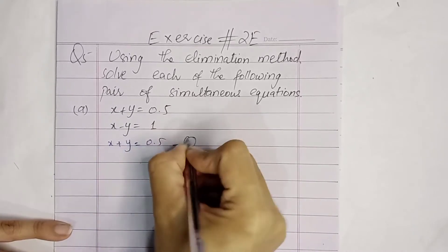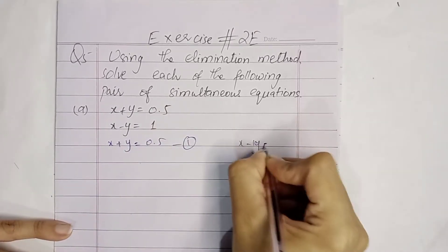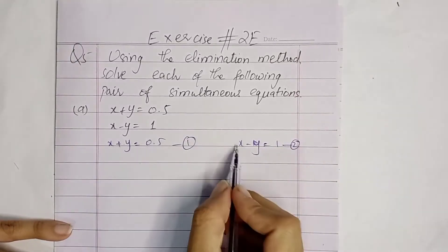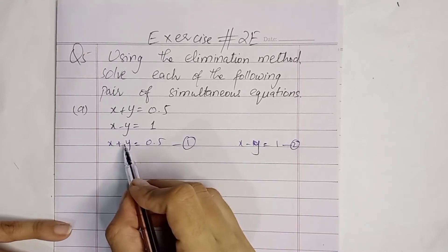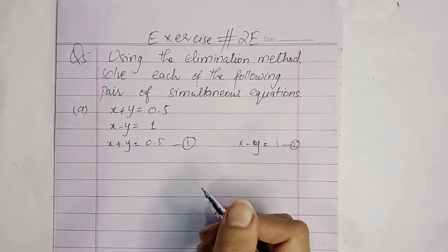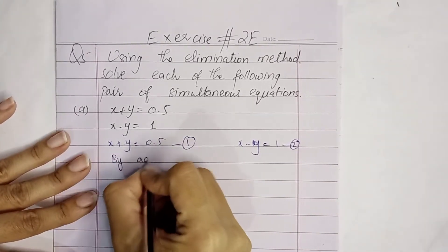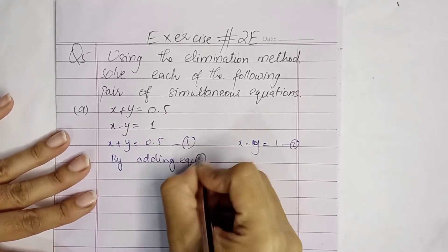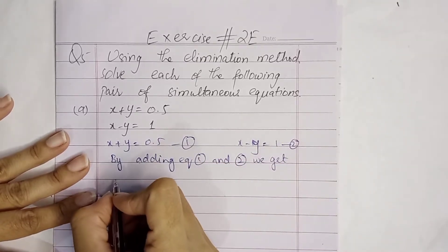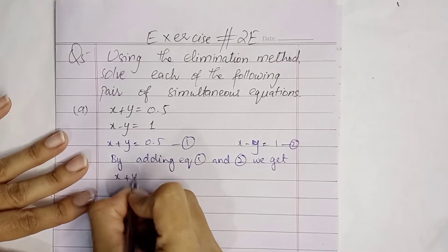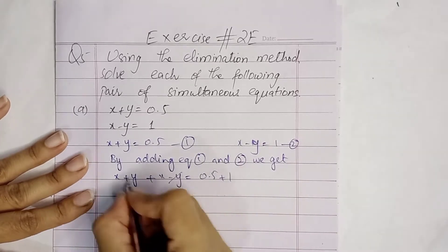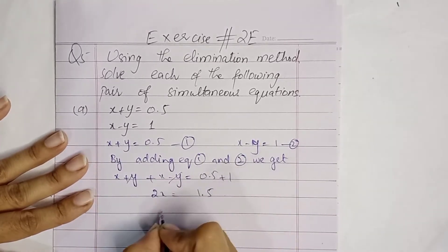This is our equation number 1 and this is equation number 2. Look, the coefficients are same, so now we will see what we need to do and solve it. By adding equation 1 and 2, we get 2x equals 1.5.